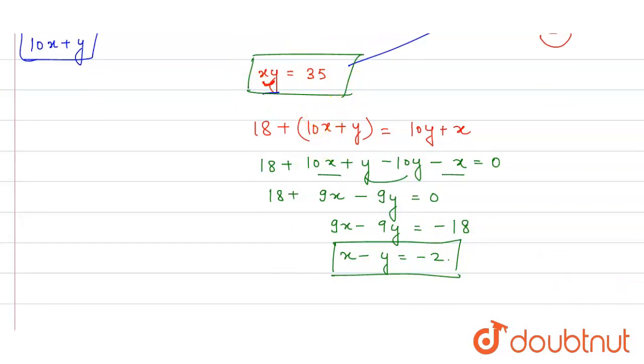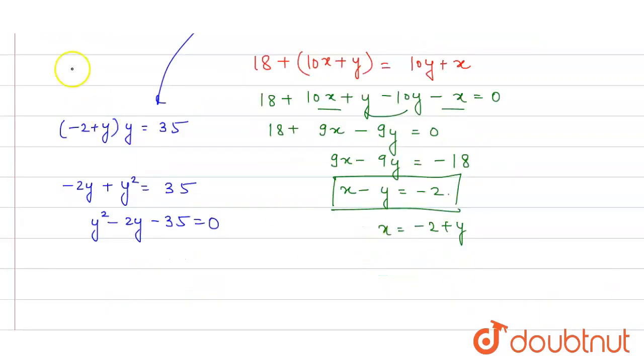x minus y equal to minus 2, or x into y is 35, given. So now, this is x's value. If x is y minus 2, we will put this in the second equation. In x's place, what will happen? y minus 2 into y is equal to 35. You will multiply. So y squared minus 2y is equal to 35. So y squared minus 2y minus 35 is equal to 0.